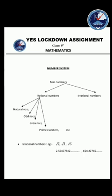Every number - 2, 3, 4, 2/3, 5/6, 5.2, like those numbers - they all are coming under rational numbers.